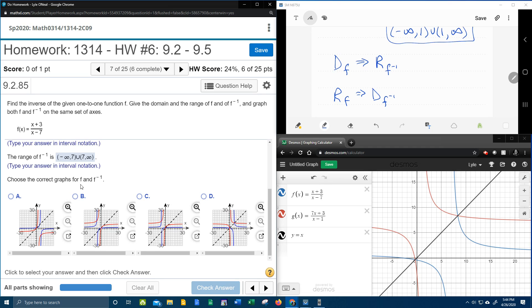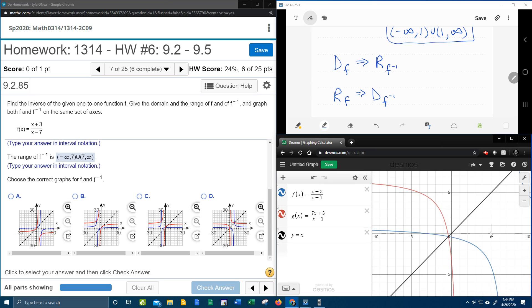And now it says choose the correct graph for f and f inverse. I already have that in Desmos over here. Noticing that my windows that I have to choose from go from negative 30 to 30, I'm going to reset my window in Desmos.